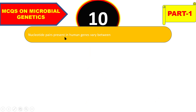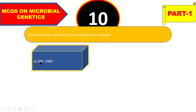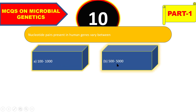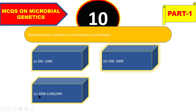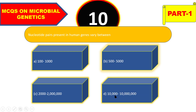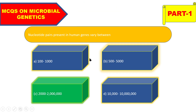Next question: nucleotide pairs present in human genes vary between 100 to 1000, 500 to 5000, 2000 to 20 lakhs, or 10,000 to 10 lakhs? The right answer is 2000 to 2,00,000 (20 lakhs).